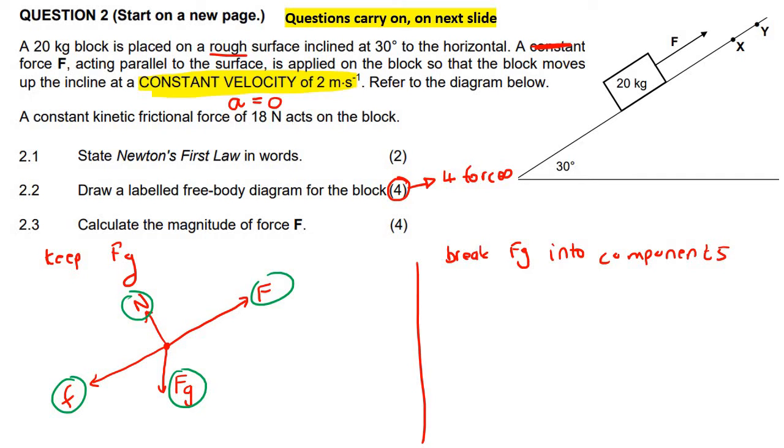If we break it up into components instead, then what we would get is there would still be a force, there would still be a friction force, there would still be a normal force. But now we would break it up into FG perpendicular and FG parallel. Some of you might say, hey Kevin, but now there's five different forces. I agree with you. But when you look at the mark allocation for a free body diagram, if you choose to use FG parallel and FG perpendicular, that only counts as one. So I hope that makes sense.